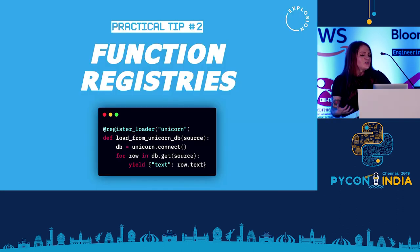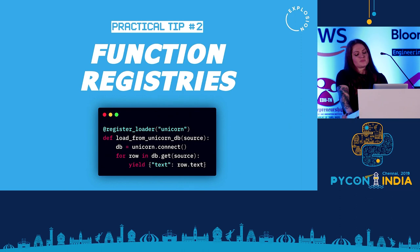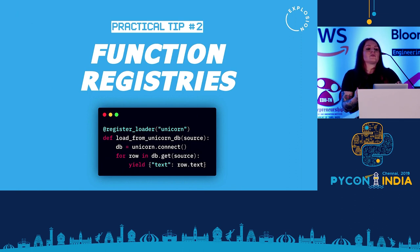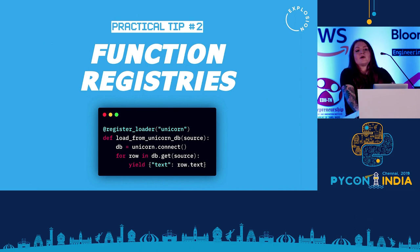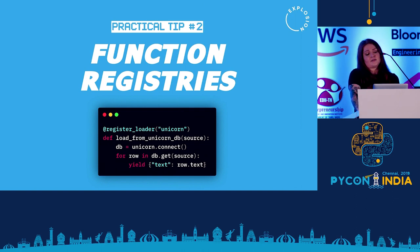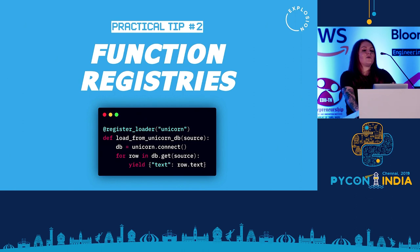Another example is what we call function registries — something we've started using all across our libraries. The idea is that you can use a decorator provided by a library to register functions — in this case, a custom loader — assign it a name, and the library knows what to do with it. If you want to load from UnicornDB, that's all you have to tell the application: you register your loader, and it can run whatever code. You don't need to monkey-patch anything or submit a pull request hoping someone integrates your stuff. It all happens under the hood, and it's very clean and independent — you can write a unit test for that function in your own code base, completely independent of the library.